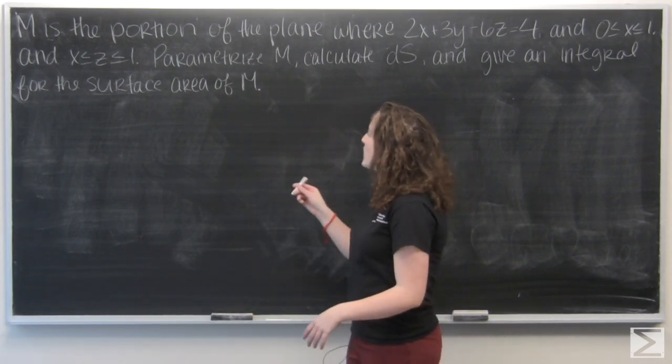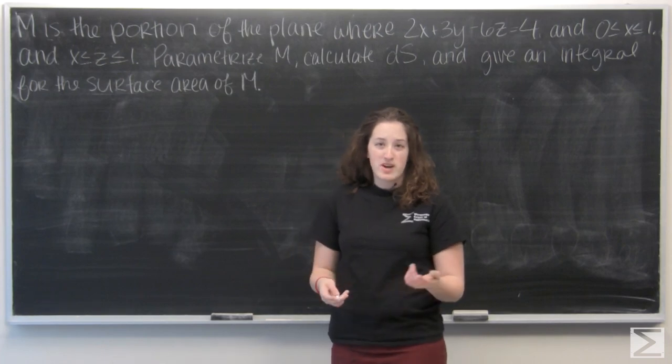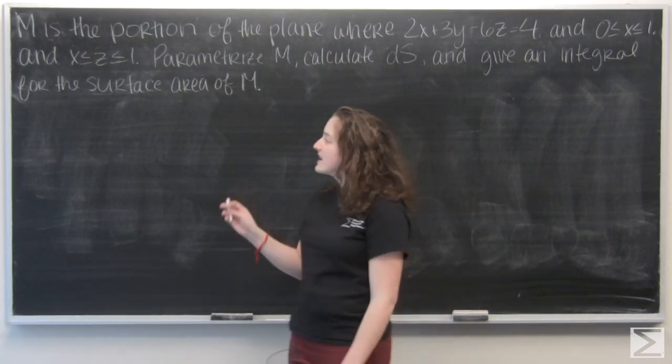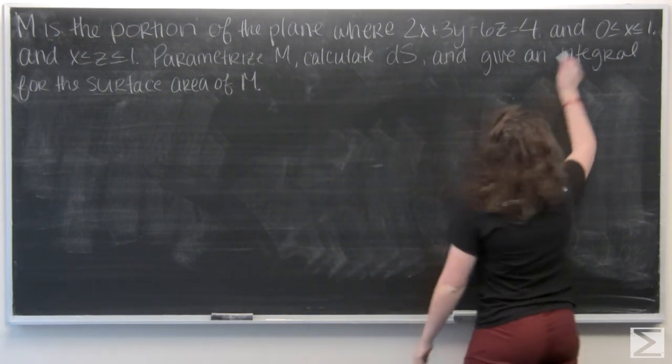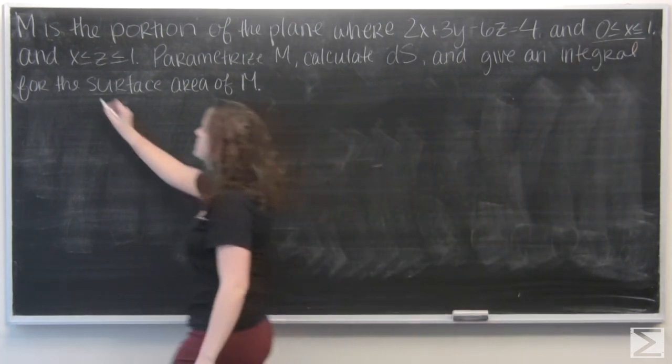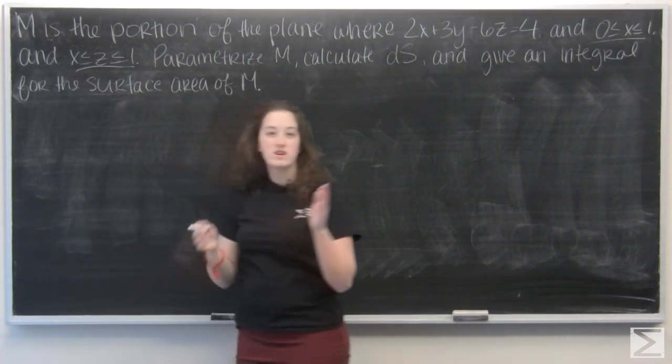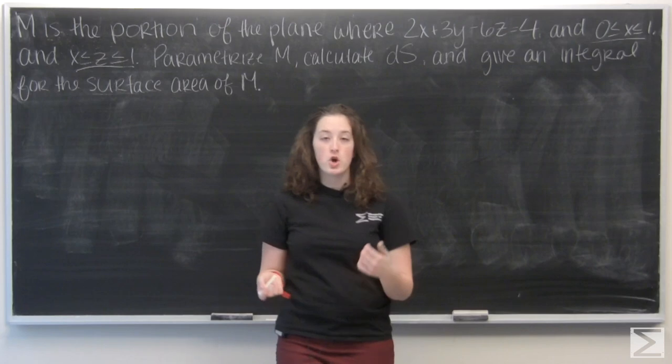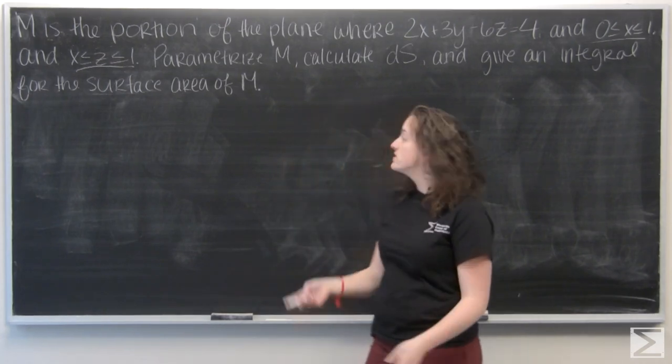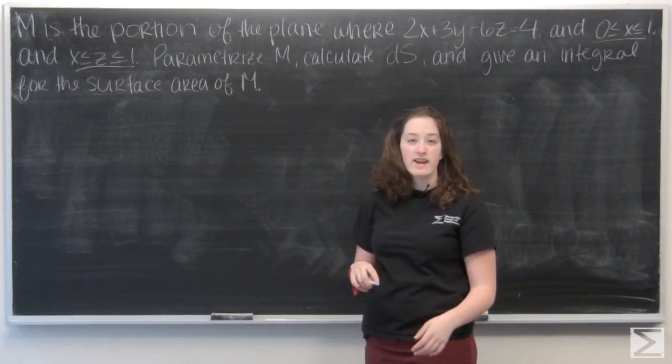Okay, so the first thing we need to do is parametrize M. Well, I can tell that I'm looking at something in the xz plane because I'm given intervals for x and z but nothing for y. So to parametrize M, first I want to solve the equation of the plane for y.